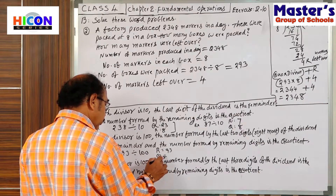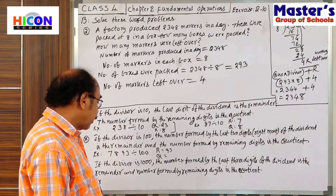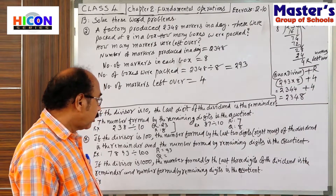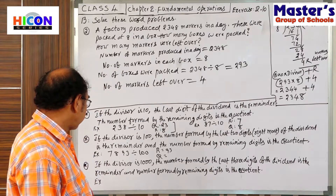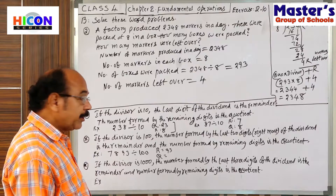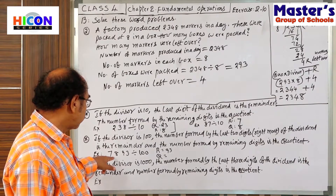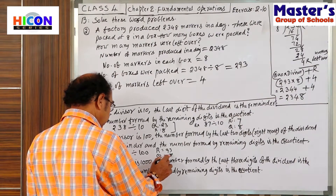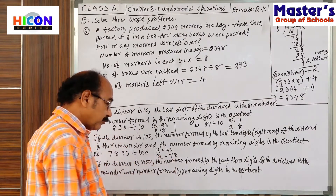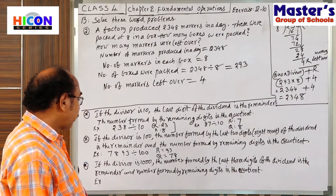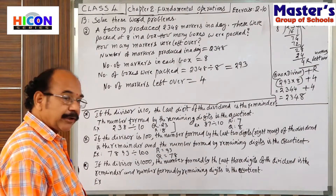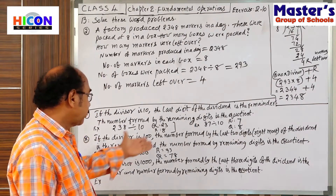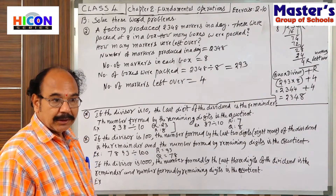What is the quotient? The number formed by the remaining digits of the dividend — what is the number formed by the remaining digits of the dividend? 78. 78 is the quotient. Check it: 78 into 100 is 7800, plus 93 the remainder. Like that.